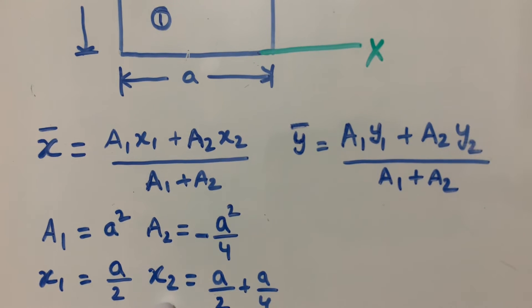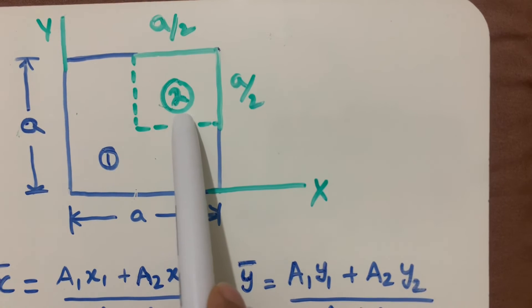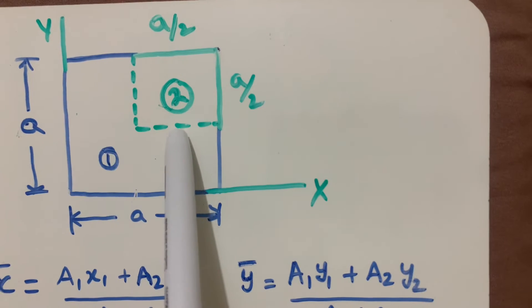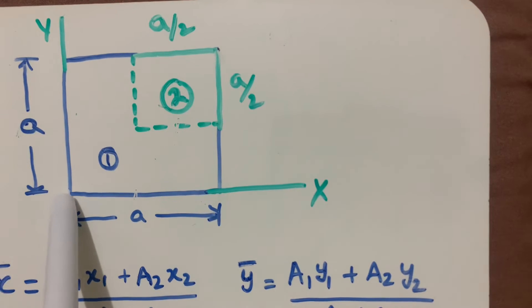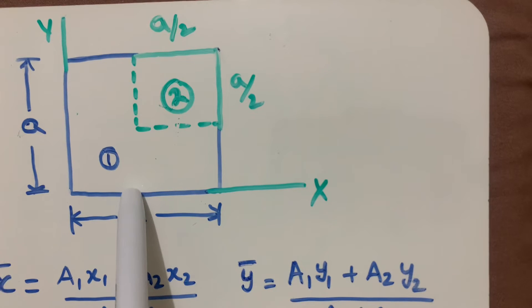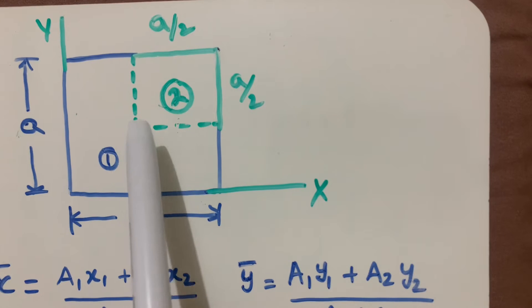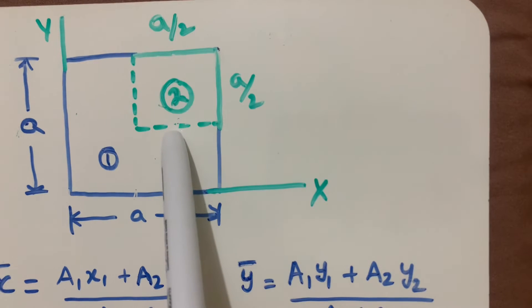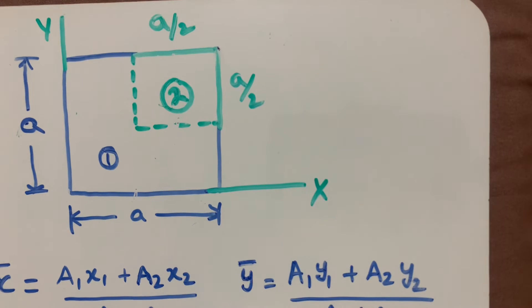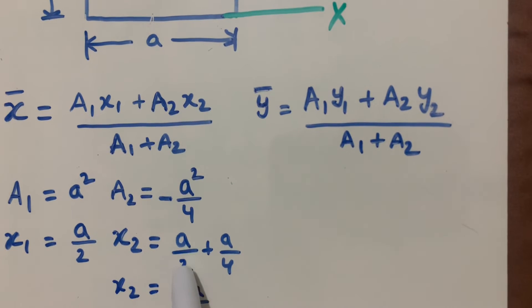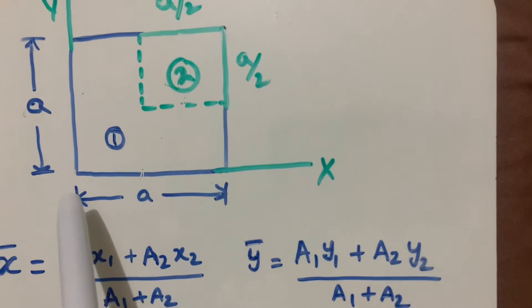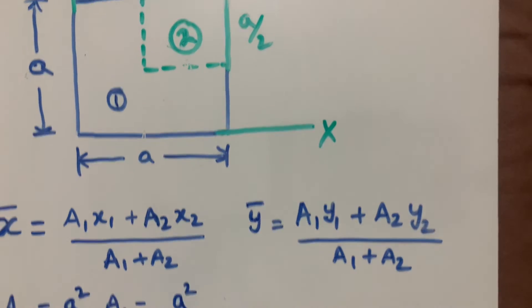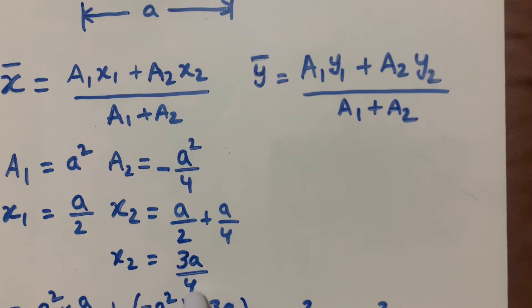Next we find x2, the centroid of the small square with respect to the y-axis. The small square starts at x = a/2 from the origin, and the centroid is at half the width of the small square, which is (a/2)/2 = a/4 further. So x2 = a/2 + a/4 = 3a/4.